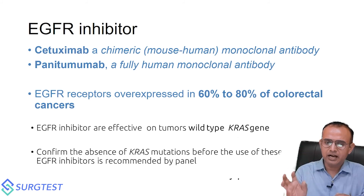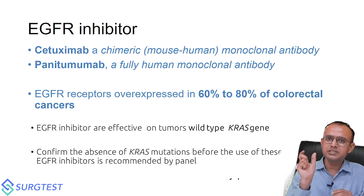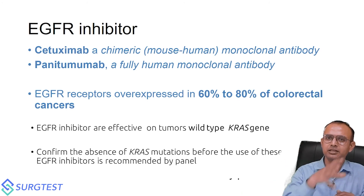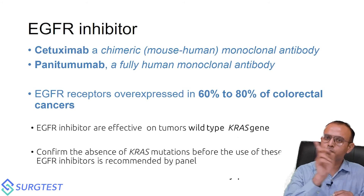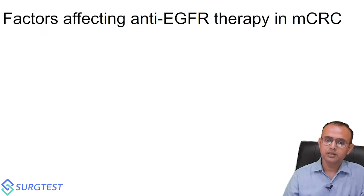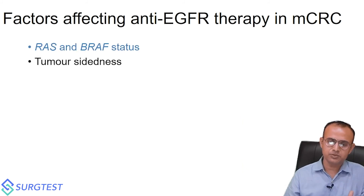KRAS gene status — wild type is normal, mutant is abnormal. Whenever we are thinking of giving an EGFR inhibitor, KRAS testing is mandatory. If KRAS is wild type, EGFR inhibitors are effective. For any metastatic cancer patient, the tumor board will first check KRAS status. If wild type, cetuximab or panitumumab may be considered. If KRAS is mutant, the question of giving EGFR inhibitors is ruled out.